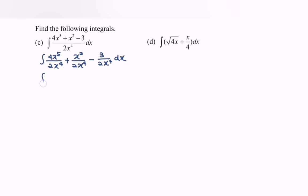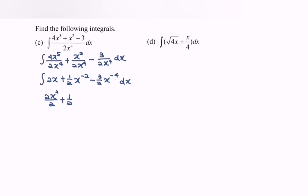Kindly simplify the situation. So we have the integral of 2x to the power of 1, plus 1 over 2 x to the power of negative 2, minus 3 over 2 x to the power of negative 4, with respect to x. Next, we are going to integrate the situation: 2x to the power of 2 over 2, plus 1 over 2 multiplied with x to the power of negative 2 plus 1 over negative 1, minus 3 over 2 multiplied with x to the power of negative 4 plus 1 over negative 3, plus c.